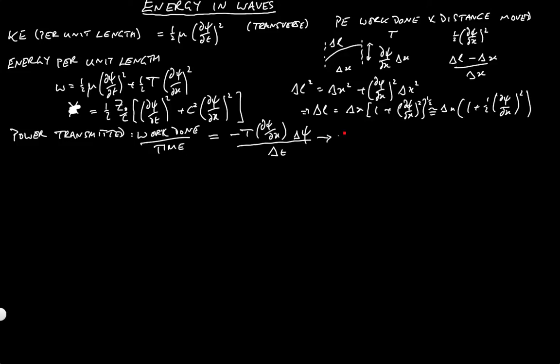The time taken is delta t. And so in the limit that delta t tends to zero, we end up with minus t dpsi by dx dpsi by dt, which is the power.